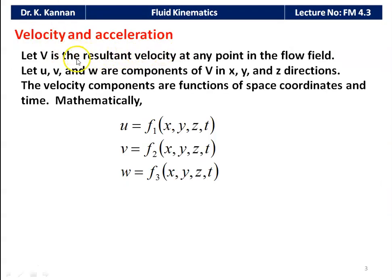Velocity and acceleration. Let V be the resultant velocity at any given point in the flow field. We know velocity and acceleration from lower semester engineering mechanics. In fluid mechanics, we represent V as the velocity in the flow field, and it is a vector quantity. Velocity has three components: u, v, w — the velocity in the x, y, and z directions respectively.